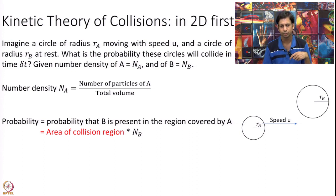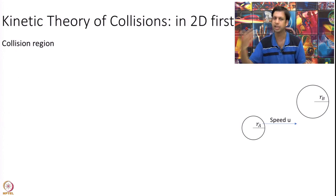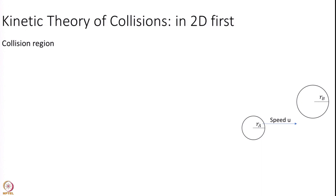Let us say I have a circle of radius Ra, it is moving with some speed u and I have some other circle of radius Rb which is at rest. What is the probability that these circles will collide with each other in some small time delta t? And let us assume a uniform density of A and B given by NA and NB, where NA is the number density which is the number of particles of A divided by total volume. Well, how do I calculate this probability now? This probability is calculated. This probability is equal to the probability that B is present in the region that A covers while it moves.